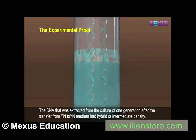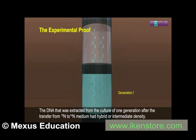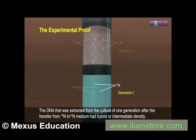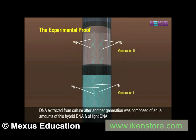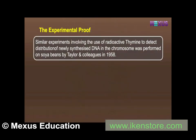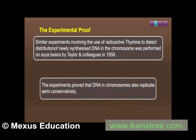The various samples were separated independently on CsCl gradients to measure DNA densities. The DNA extracted from the culture one generation after transfer from 15-N to 14-N medium had hybrid or intermediate density. DNA extracted after another generation was composed of equal amounts of hybrid DNA and light DNA. Similar experiments using radioactive thymine, performed on soya beans by Taylor and colleagues in 1958, proved that DNA in chromosomes also replicates semi-conservatively.